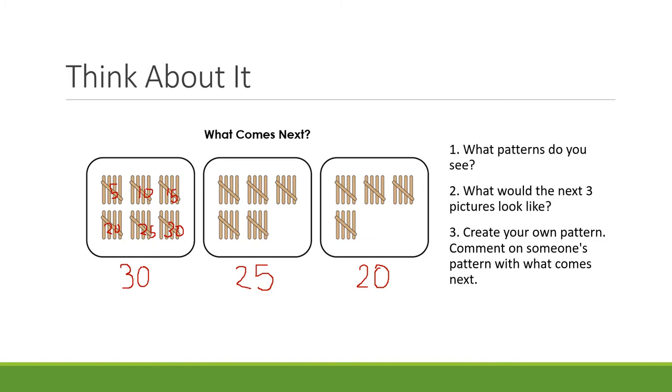You might have been thinking about taking away one group of five in each one, so our next group would have only three groups of five. How many popsicle sticks would that be? That's right, that's 15. Then the next one would only have two groups of five, and that would be 10 popsicle sticks. And then the next one would only have one group of five, which would be 5 popsicle sticks.